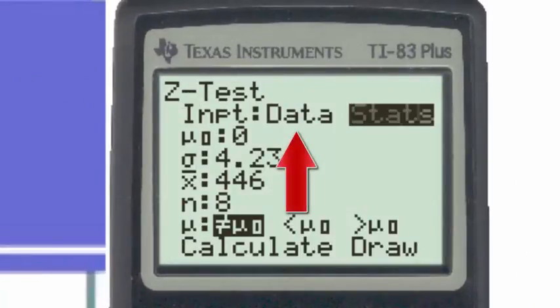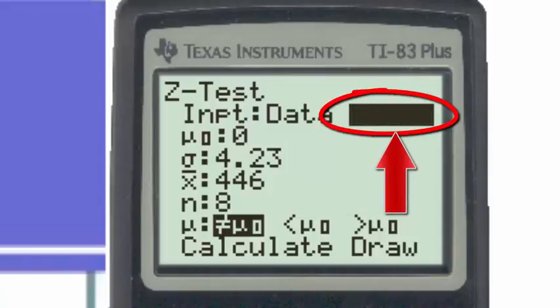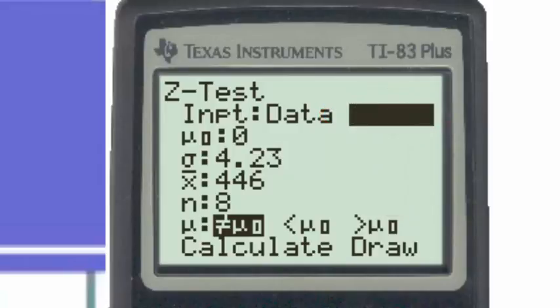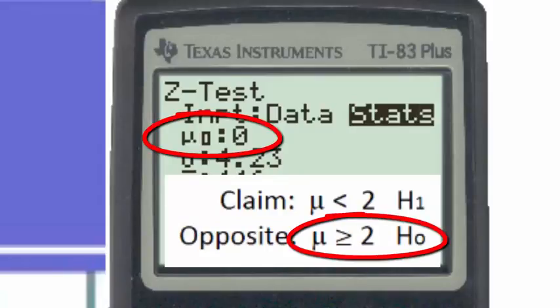The input is going to be either in the form of a data list or summary statistics, and in this case, we're going to be using summary statistics. The mu subscript 0 stands for the number that we find in the null hypothesis, and the number found in the null hypothesis is the number 2.